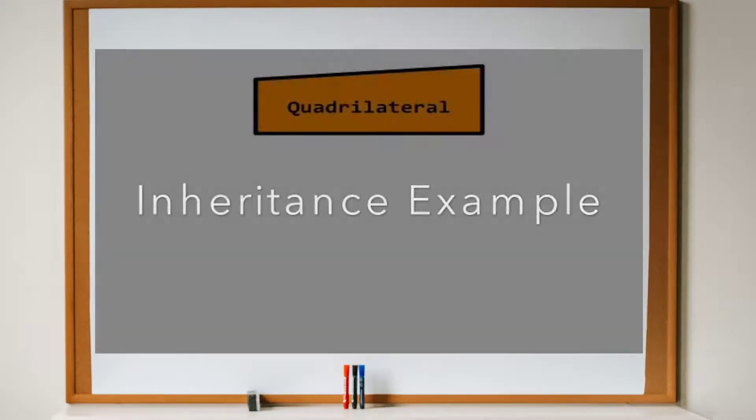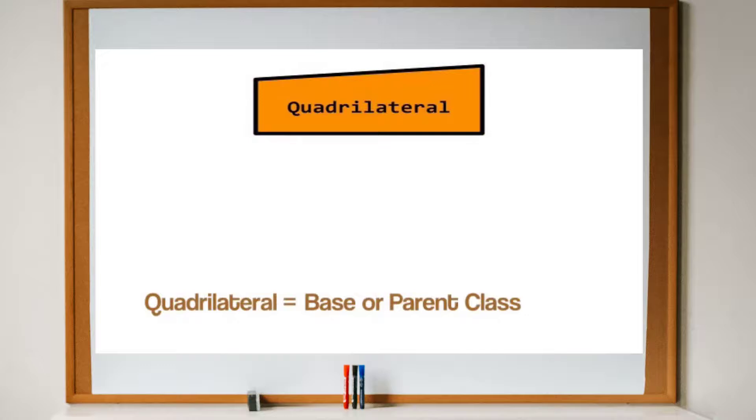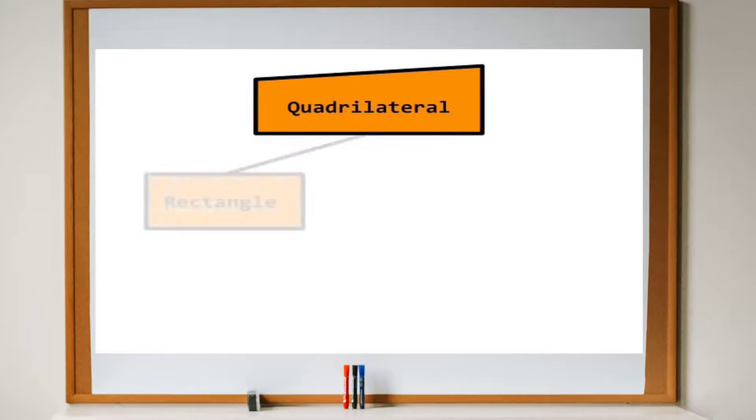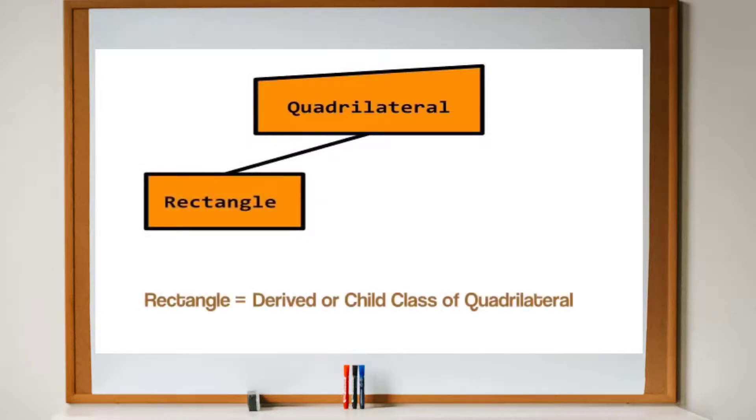Here is an example. Suppose we have a class named quadrilateral. This class is the template from which we build four-sided polygon objects. To demonstrate inheritance, let's give the quadrilateral class a child called rectangle. Rectangle objects have all the attributes of quadrilateral with one additional property. Rectangles not only have four sides, the interior angles must each be 90 degrees.